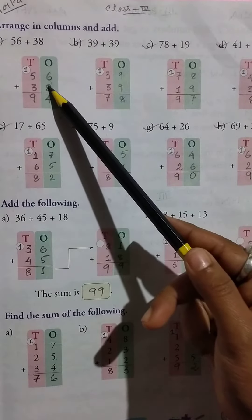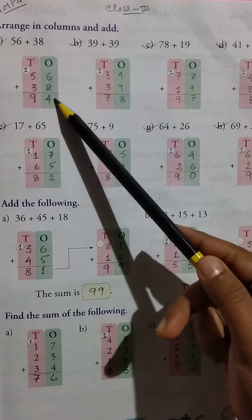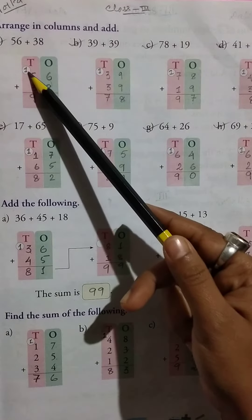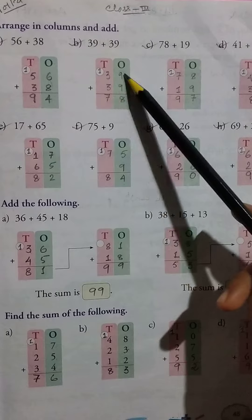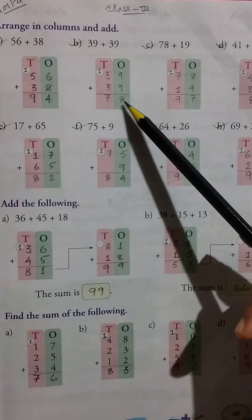6 plus 8 equals 14, so 4 here and 1 here carry. So 5 plus 1 equals 6, 6 plus 3 equals 9. The answer is 94. Then 39 plus 39 equals 9 plus 9 equals 18, 8 here and 1 here carry.